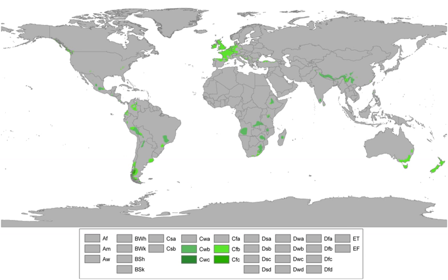The subtropical highland variety of the oceanic climate exists in elevated portions of the world that are within either the tropics or subtropics, though it is typically found in mountainous locations in some tropical countries. Despite the latitude, the higher altitudes of these regions mean that the climate tends to share characteristics with oceanic climates, though it also tends to experience noticeably drier weather during the lower sun, winter season.